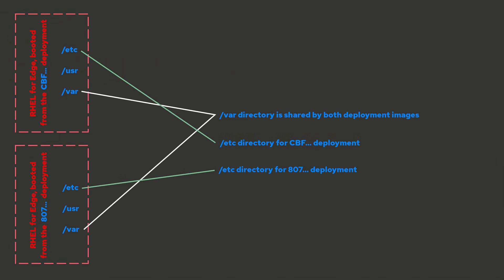The Etsy directory works differently, as each deployment has its own separate writable Etsy directory. If I had two deployment images and I created a file under Etsy and then booted from the other deployment, the file would no longer show up under Etsy, because each deployment has its own Etsy. As part of an RPMOS tree upgrade, a new writable Etsy directory is created for the new deployment, and it's created by doing a three-way diff between the old default configuration, the active system's Etsy, and the new default configuration.